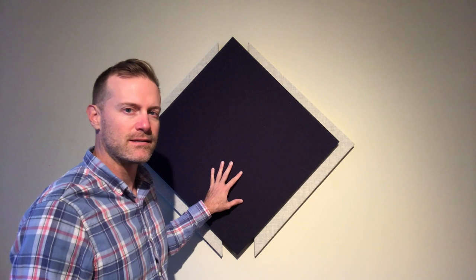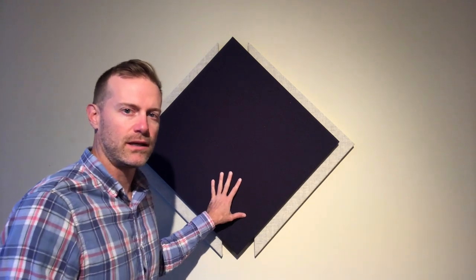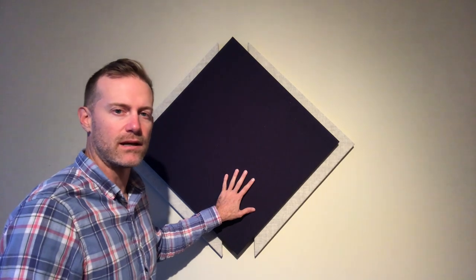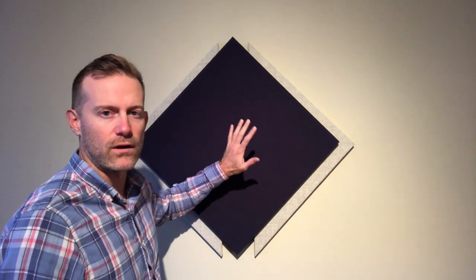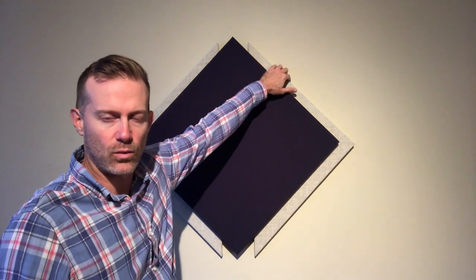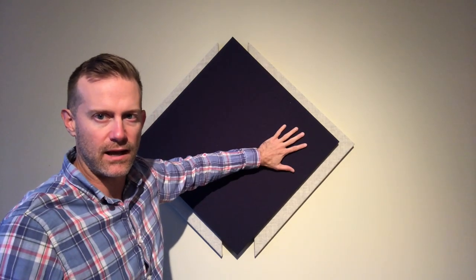So there you have it. This is the diamond layer acoustic panel kit, and that was also a good example of how to use double-sided impaling clips for kits that are layered like this, where it's a panel against the wall and then another panel on top. If you have any questions, feel free to call or email us.